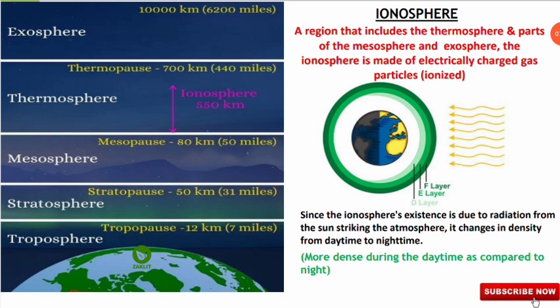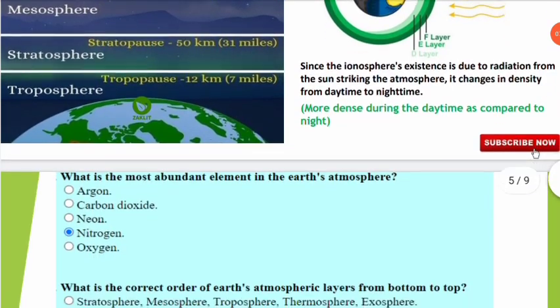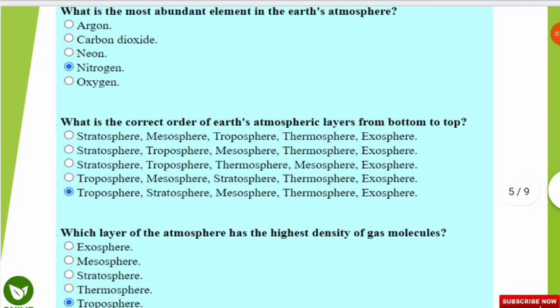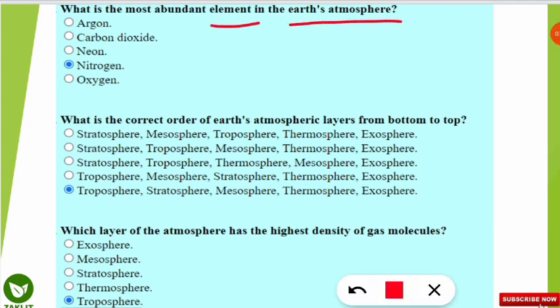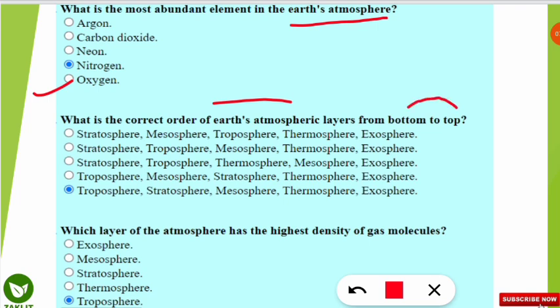Now for some rapid revision basic questions on atmospheric layers. The most abundant element in Earth's atmosphere is nitrogen, constituting about 78%, followed by oxygen at around 21%. The correct order of Earth's atmospheric layers from bottom to top is: troposphere, stratosphere, mesosphere, thermosphere, and exosphere. Note that if asked from top to bottom, the sequence reverses.